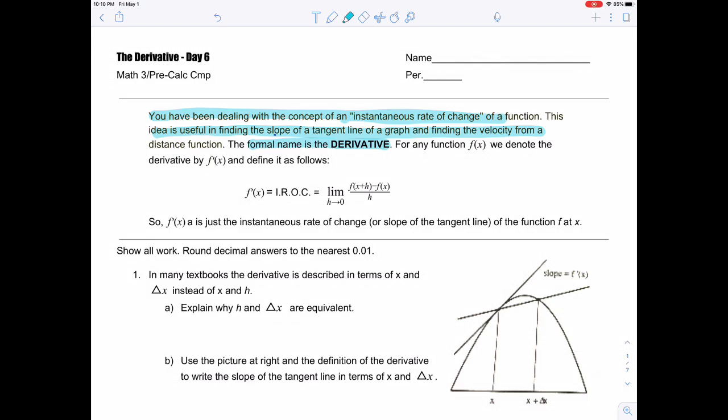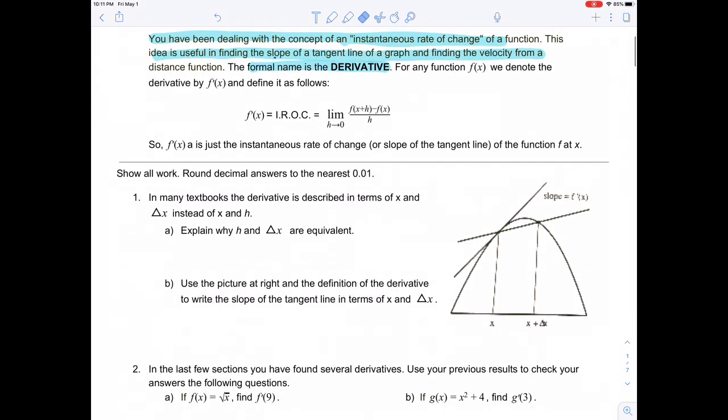Here's the formula we're going to use for the derivative. The derivative is just the instantaneous rate of change. We've seen this formula a lot. How you denote this is f prime of x - it looks like a little apostrophe. f prime of x is just the instantaneous rate of change or the slope of the tangent line of a function at point x.